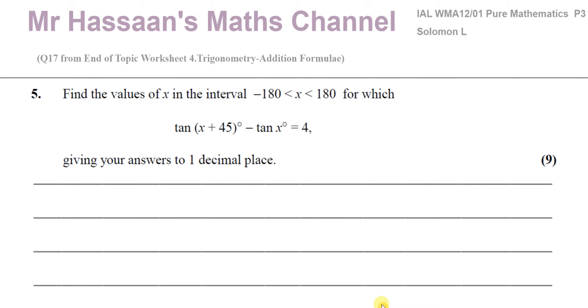This question tells us to find the values of x in the interval minus 180 less than x less than 180 degrees for which tan of x plus 45 minus tan of x equals 4, giving your answers to one decimal place. So we have a compound angle here and then an angle on its own, tan x.